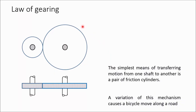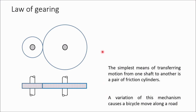Hello again. In this video, we will discuss the law of gearing. There are different methods that can be used to transmit motion and power from one shaft to another. The simplest one is the pair of friction cylinders. If these two surfaces are rough and sufficient pressure is applied between the two cylinders, then motion of one cylinder will cause motion of another cylinder. The bicycle wheel on a road is a classic example. Friction is also used for transmitting motion through belts and ropes.